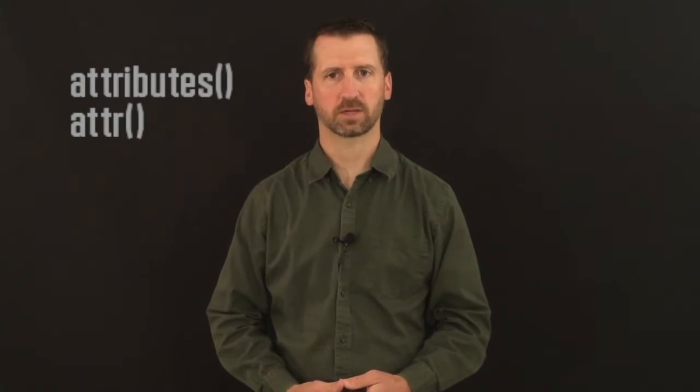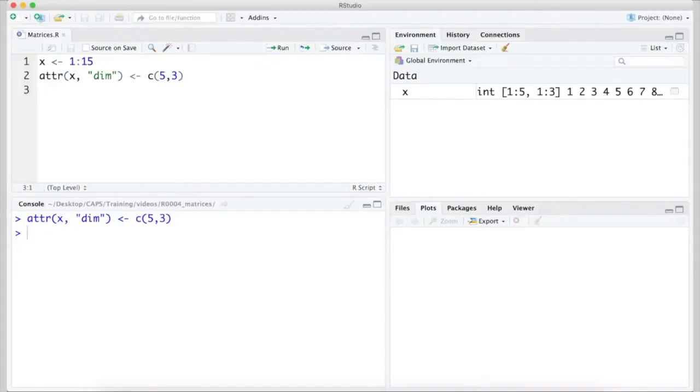Now, let's add a dimension attribute to the vector. While the attributes function allows you to view attributes of an object, the attr function allows you to assign new attributes. One that can be assigned is dim, short for dimension. Here, we're assigning two dimensions, five rows and three columns, as the dim attributes of X. If we now check the attributes again, we see the new dim attribute.